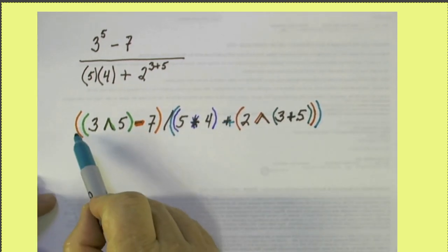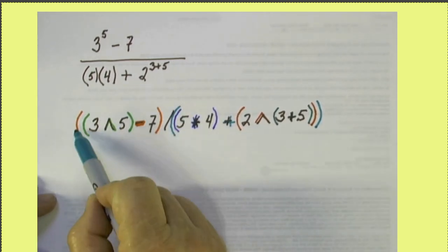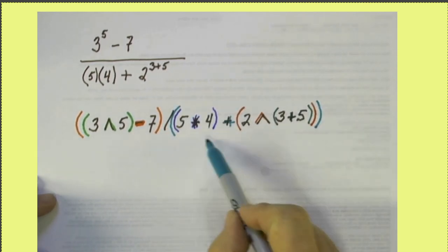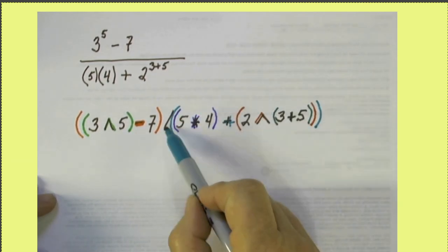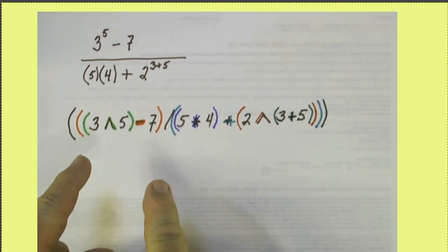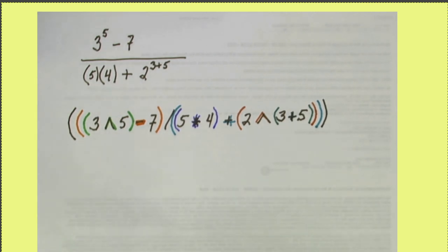So this division involves this red number that we're getting from here and this turquoise number, this number that we've got on the bottom. So now with each binary operation there's a set of parentheses that shows what the two numbers are that are being operated on by that particular binary operation.